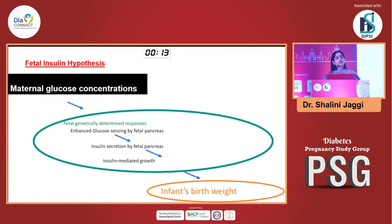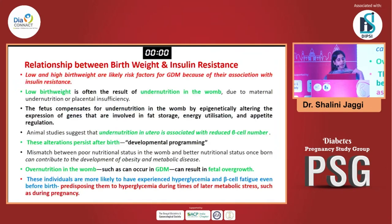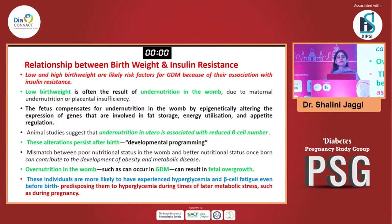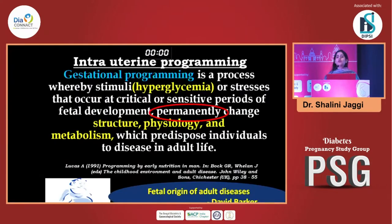We now know that if maternal glucose levels are high, they cross over from the placenta into the fetus. As a result, the birth weight of the infant has a very direct relationship with gestational diabetes. Low birth weight on one end and a macrosomic, large for gestational age baby on the other end — both of these children are being predisposed to developing GDM if they happen to be female, or developing diabetes if they happen to be male. On one side you have undernutrition in the womb; on the other hand you have overnutrition.